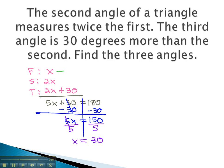x is what we labeled the first angle to be. x is 30 degrees. To find the second angle, which is 2x, we simply do 2 times our 30. 2 times 30 tells us the second angle is 60 degrees.